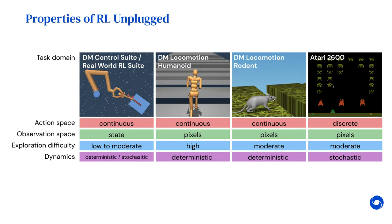Real-world problems are diverse and require solutions that work across a range of properties. Our benchmark includes several task domains chosen to span these properties, including action space — whether it is discrete or continuous, low or high-dimensional — observation space, whether the agent has access to the state of the MDP or high-dimensional observations such as images, partial observability and the need for memory, whether the task requires the agent to estimate the state by integrating information over long horizons, exploration difficulty, which can depend on the action space as well as the sparseness of the reward or the horizon of the problem, and real-world challenges such as action delays, stochastic transition dynamics, or non-stationarity.